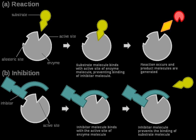For example, strychnine acts as an allosteric inhibitor of the glycine receptor in the mammalian spinal cord and brain stem. Glycine is a major postsynaptic inhibitory neurotransmitter with a specific receptor site. Strychnine binds to an alternate site that reduces the affinity of the glycine receptor for glycine, resulting in convulsions due to lessened inhibition by glycine.